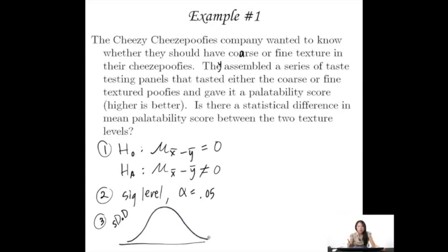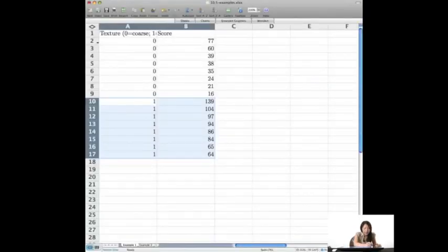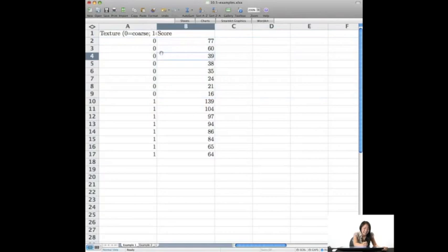So here I'm going to draw an SDOD. Can we assume normality? Well, they are different. And let's look here. We have eight scores and eight scores. So the n is really low. So technically, we might not be able to do hypothesis testing.